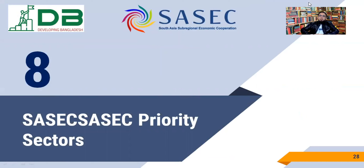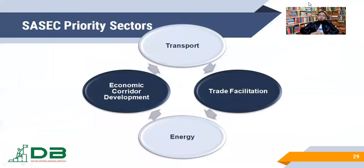What are the SASEC priority sectors? From our previous discussion, it is quite clear that SASEC is working with some priority areas. For example, transportation — it could be land transport, railway transport, air transport, or sea transport. Any form of transportation cooperation is one of the priority sectors for SASEC cooperation.